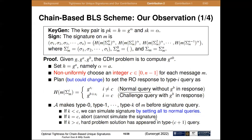We introduce the second contribution first. Our proof for the chain-based BLS scheme works as follows, without changing the scheme. Given the CDH problem instance, we set the secret key equal to a. The key point is that we non-uniformly choose an integer c from the range 0 to n-1 for each message. We plan to embed the response to the type c query as the challenge query where i equals c, and the response contains g^b. Other queries are normal queries without g^b in the response.